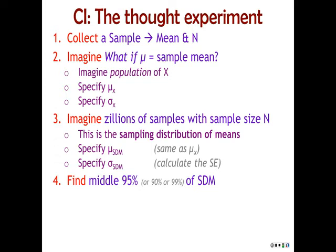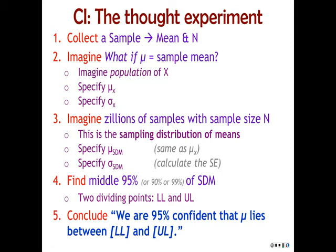Then we find the middle 95% of that sampling distribution of means. And by finding the middle 95%, we have to find the two points that cut off the middle 95%: the lower limit and the upper limit. And then our conclusion is usually something like: we are 95% confident that the true population mean lies between 25.6 and 38.9, or whatever our numbers are.